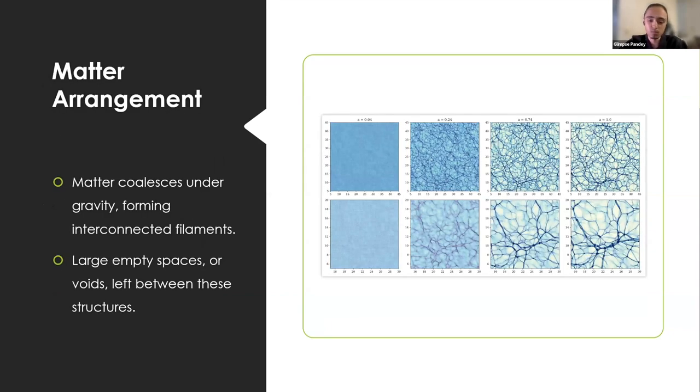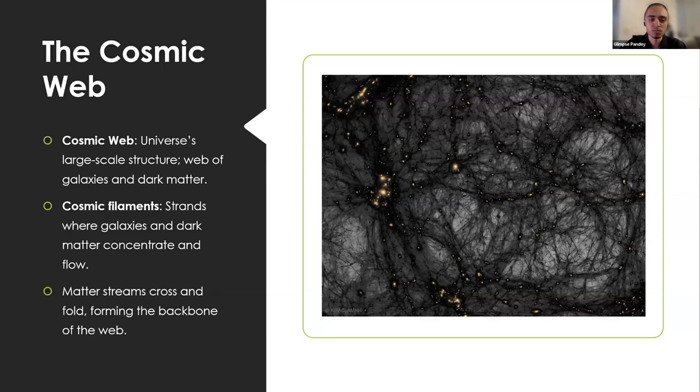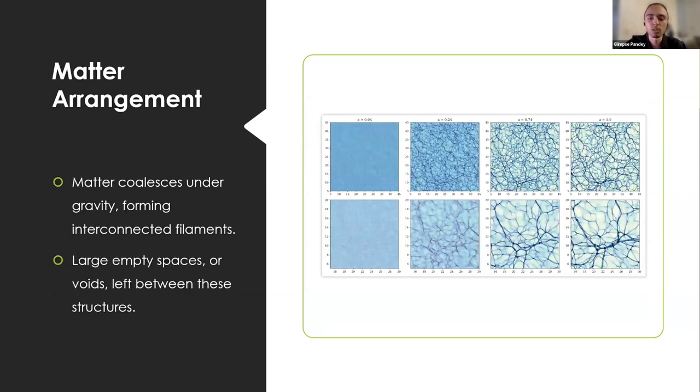In terms of matter arrangement, the picture on the right is a beautiful depiction of the cosmic web. This is the density plot of matter distribution from one of our simulations. We can see eventually, with time, matter coalesces under gravity and forms interconnecting filaments, leaving some voids in the middle. The initial distribution is completely uniform.